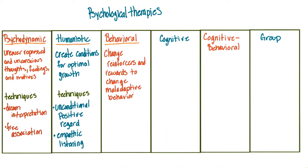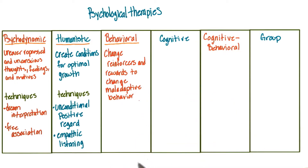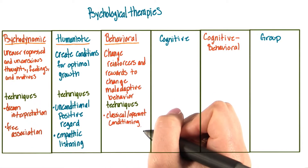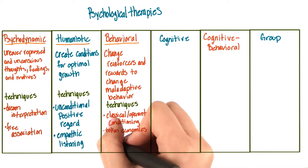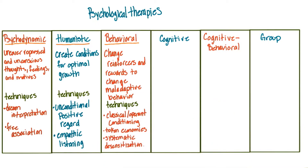The goal of behavioral therapy is to change reinforcers and rewards to change maladaptive behavior. The techniques include classical and operant conditioning, token economies, and systematic desensitization.